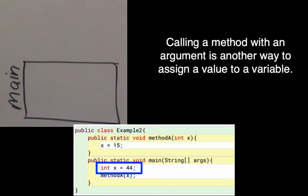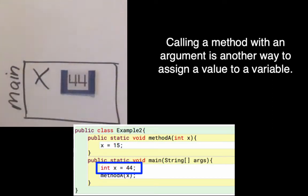Inside my method, the first line says int x equals 44. I'm going to read that equals since it's an assignment statement as gets. So int x gets the value 44. That's going to create a variable named x and it gets the value 44.